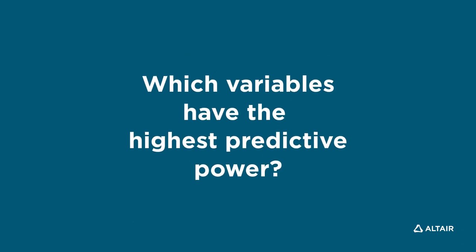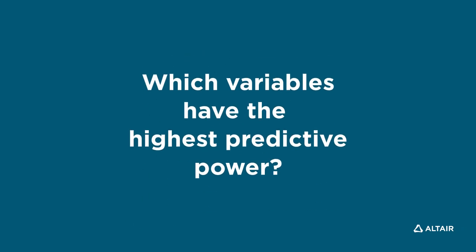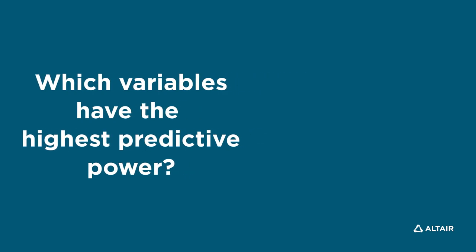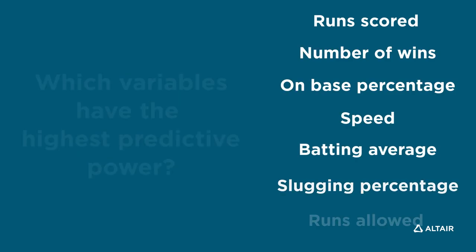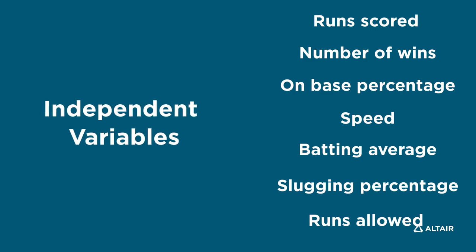The Oakland A's management then had to identify the variables with the highest predictive power regarding whether a team would make it to the playoffs. The other variables include factors like runs scored, number of wins, on-base percentage for players, and many more. We call these independent variables.